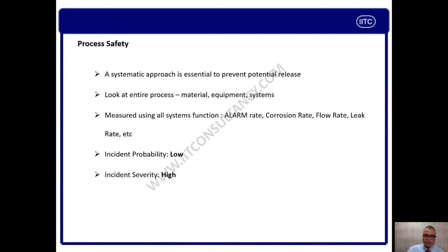In terms of probability, process safety events are very few. But the severity is very high. When I say severity is very high, that means it can kill many people at one point in time, because anyone in the contour of high fire, high radiation, or high explosive zone will be affected and may be killed. The severity is high in terms of fatality, production loss, reputation loss and financial loss.